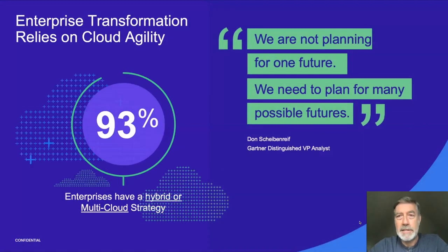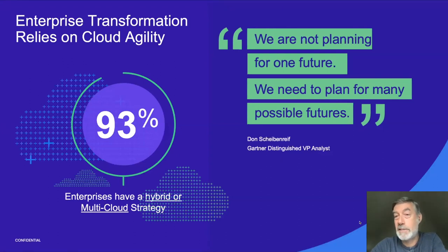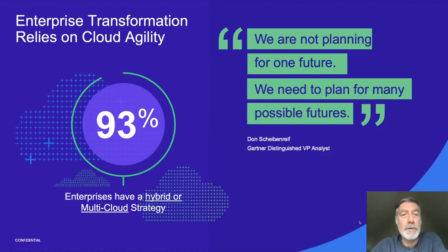That network architecture started to have problems when cloud came along. As enterprises started to digitally transform, they started to rely a lot on the cloud and the agility it provided. The statistic I'm showing you is enterprises that have a hybrid or multi-cloud strategy — it's essentially a saturation statistic. Just about everybody has a strategy. Adoption statistics are actually in the mid-80s now: 82 to 85% of enterprises already have multiple private and multiple public clouds, according to a Gartner survey.